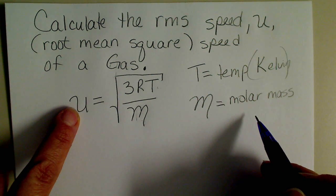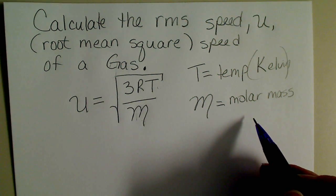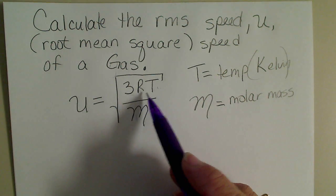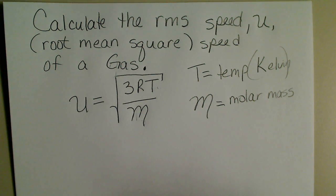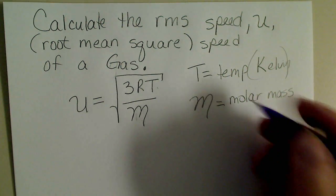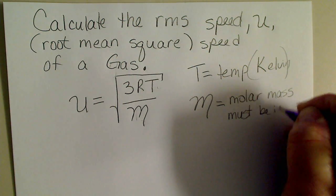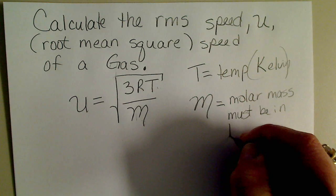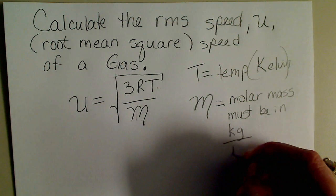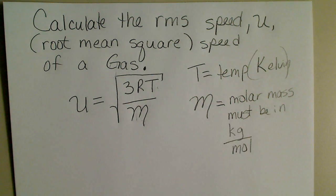The molar mass is very easy to calculate using the formula for the gas and the periodic table. But since our speed is going to be in meters per second, and R has the joule unit in it, the molar mass must be in kilograms per mole.